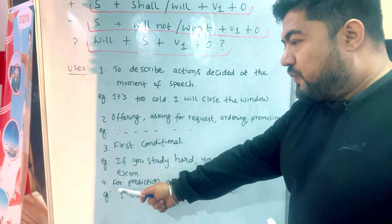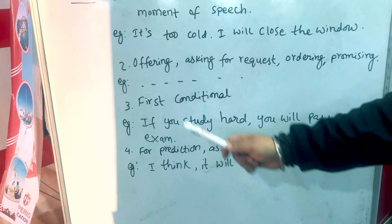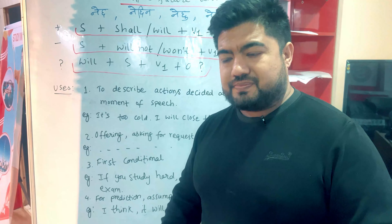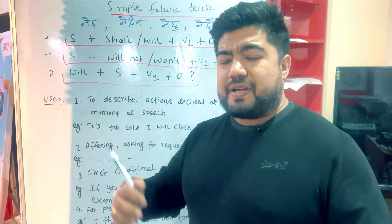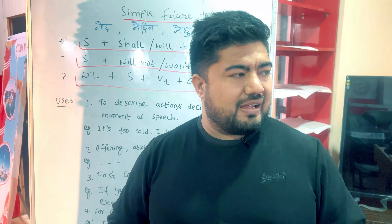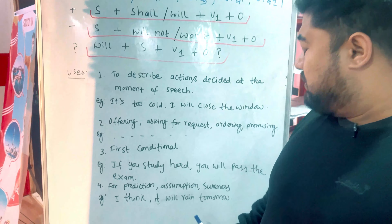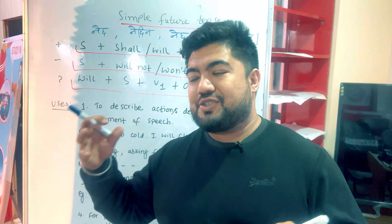The last use — number four — is for prediction, assumption, and sureness. For example: I think it will rain tomorrow. I don't think she will come. I will pass the exam — that expresses sureness.